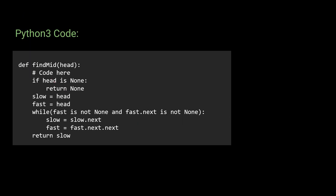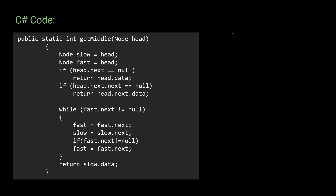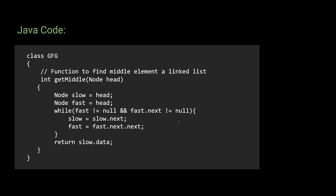In the Python 3 code, we first check if head is None and return None if so. We create slow and fast variables assigned to head, and again check whether fast or fast.next is null, moving slow one node and fast two nodes forward, then returning the slow value. The C# code follows the same pattern — the logic is identical across all four languages.